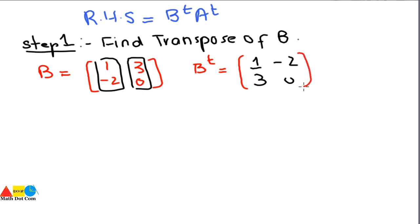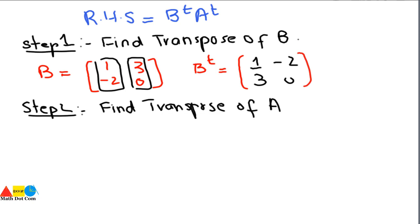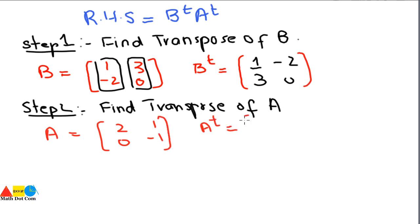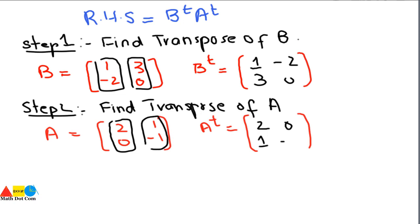Step 2 is to find the transpose of A. A equals [2, 0; 1, -1]. Its transpose is found by converting columns into rows: the first column [2, 1] becomes [2, 1] and the second column [0, -1] becomes [0, -1]. So A transpose equals [2, 1; 0, -1].